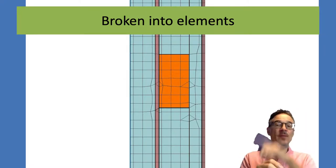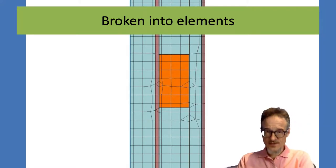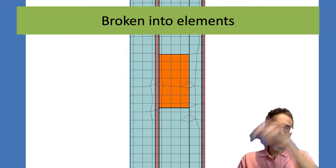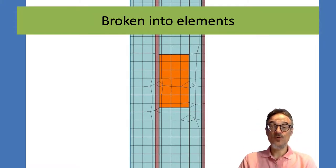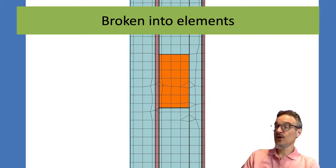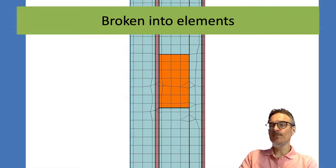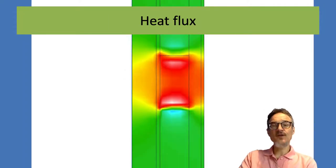And then it will work out what's happening in the heat flow in each of these little boxes. And it will then go back to the beginning, calculate again. Go back to the beginning, calculate again. And keep calculating until it gets the same answer. Or it gets a close answer twice in a row. And then it will give you a picture of what's happening.